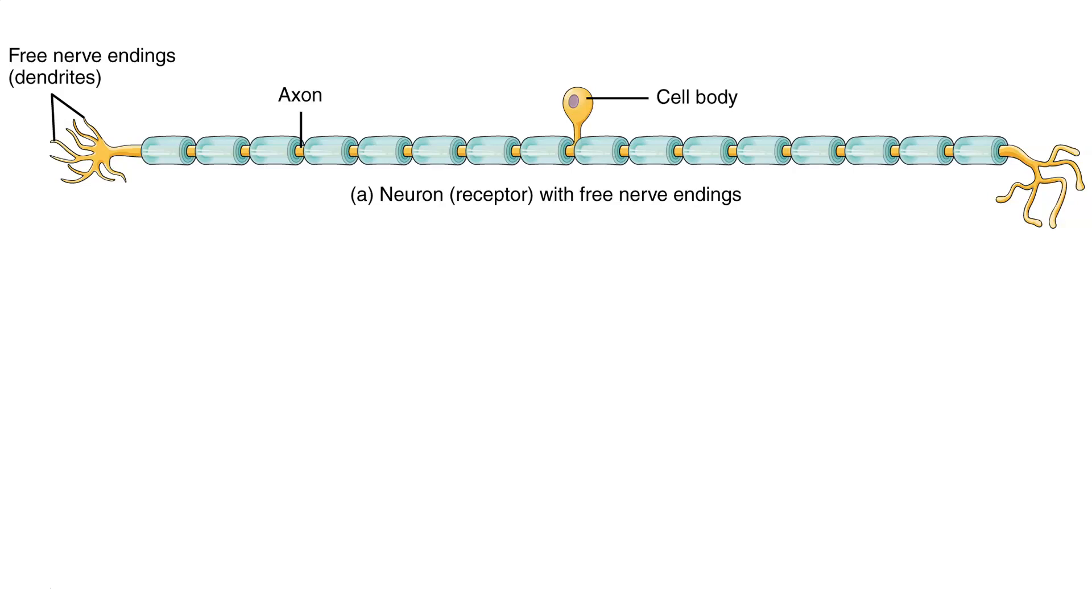Well, similar to how cells receive messages using receptors, we also have cells that act as receptors. For some of these receptors, they might be the neuron itself, like you see here, using a free nerve ending to detect changes in the environment.